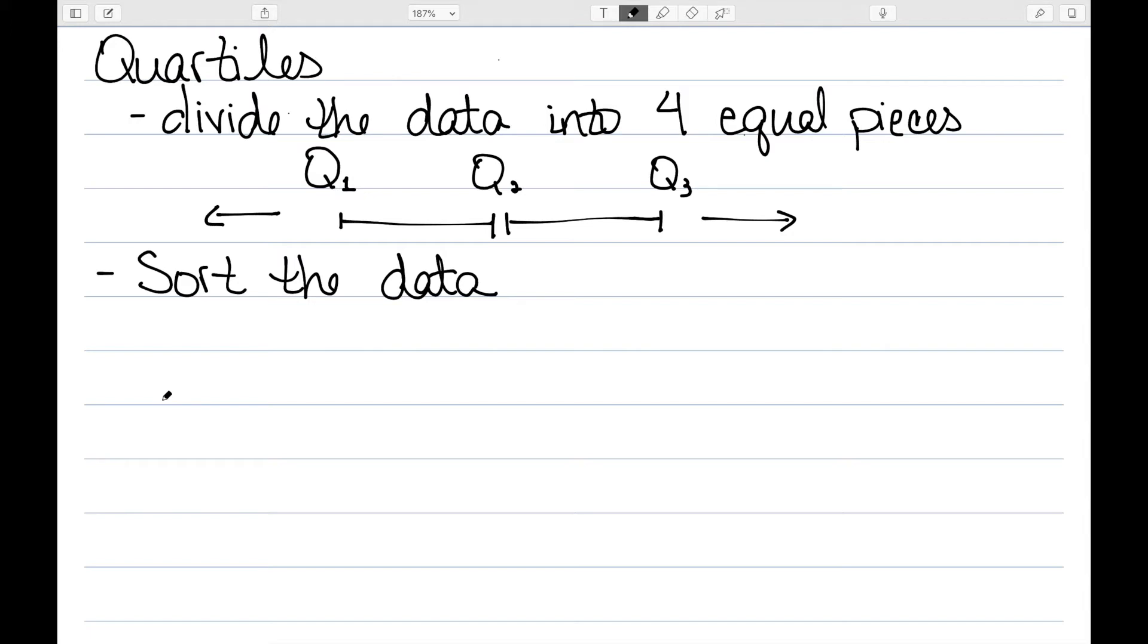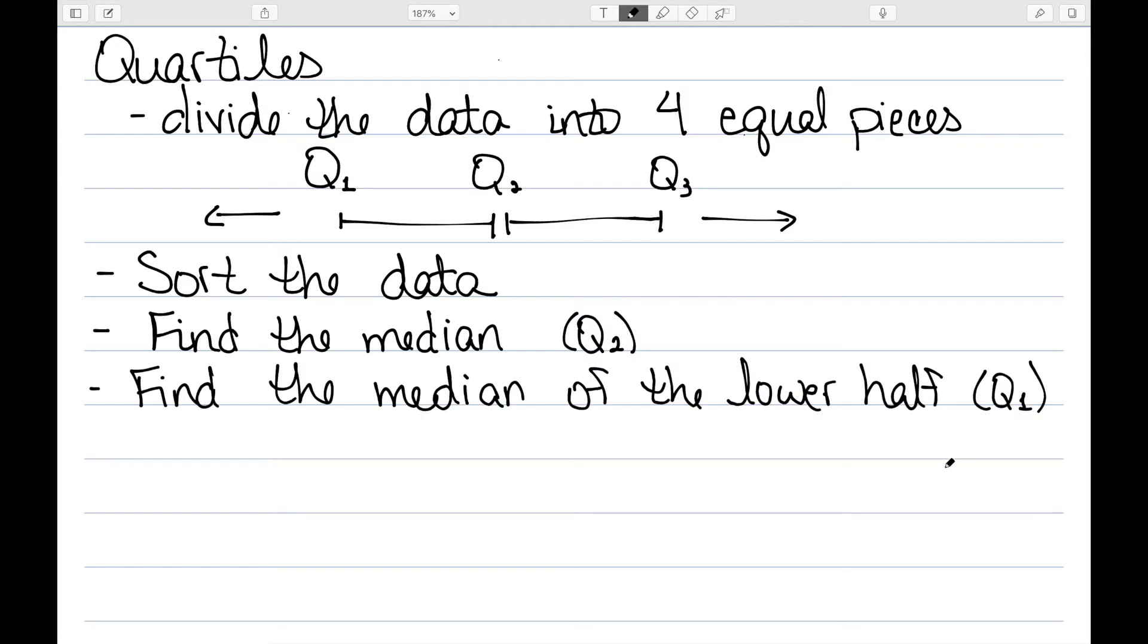The first step to finding these quartiles is to sort the data. We then find the median of the data set, and the median is Q2. The median then breaks the data set up into two pieces. We find the median of the lower half of that, and that's known as Q1. We then find the median of the upper half, which is Q3.